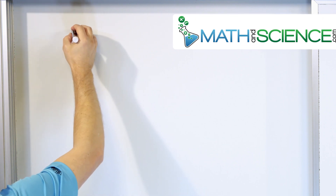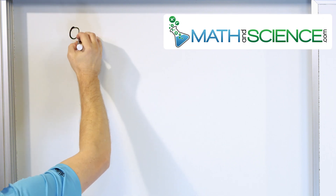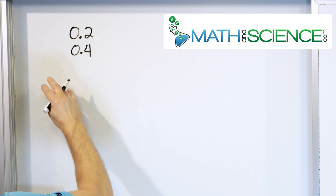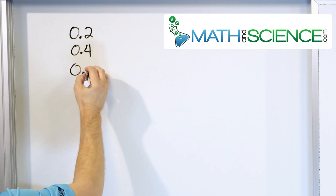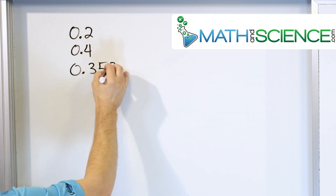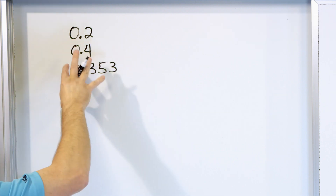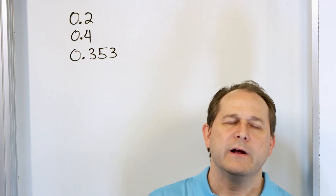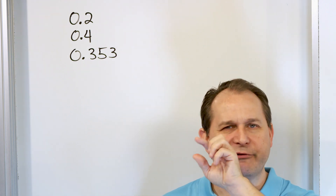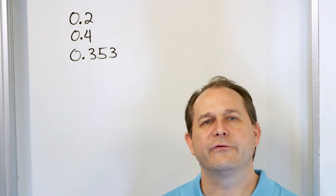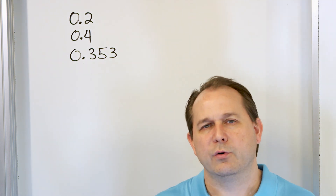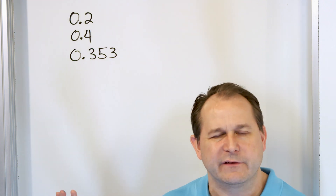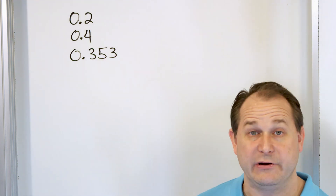Here we have some decimals that you're familiar with: 0.2, 0.4, 0.353. These are all decimals that stop — they don't go on and on forever. In a calculator window, you would just see those digits and that would be it. Those are called non-repeating decimals. These are the decimals that we have experience with every day.